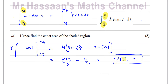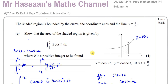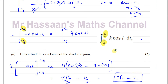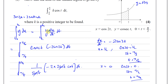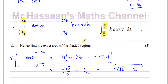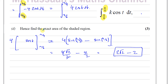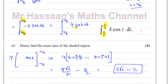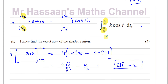That concludes question 7 from the end of topic worksheet and Solomon A paper. The key point students may find confusing: we got -4 initially, but because the limits are in the opposite order to what the question shows, swapping them changes the sign. For example, evaluating with π/6 first gives 2 - 2√2, the opposite sign.